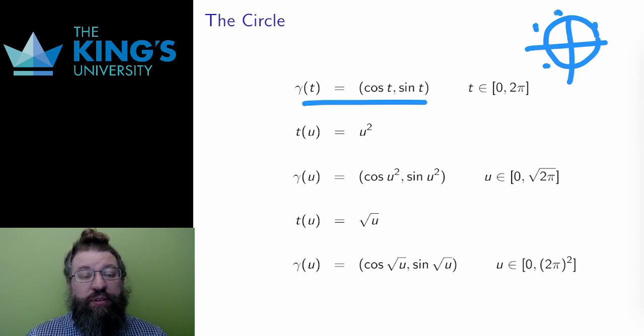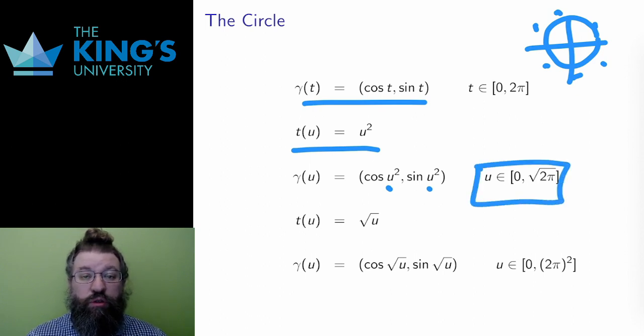Now what happens if we replace t with u squared? Well, I need to change the domain to match. So the domain is now u from 0 to the root of 2 pi.